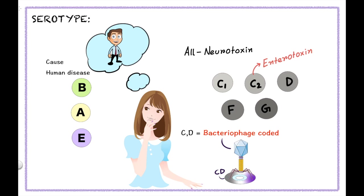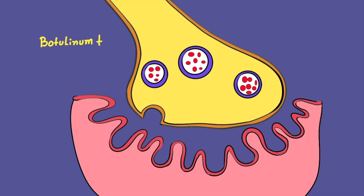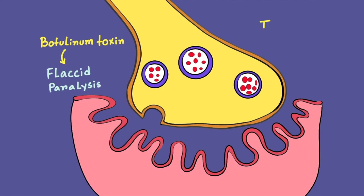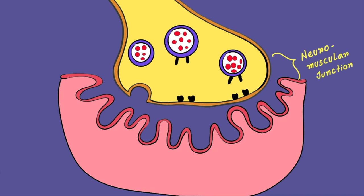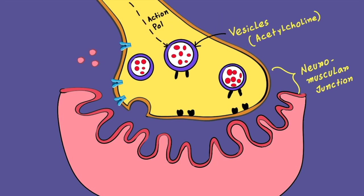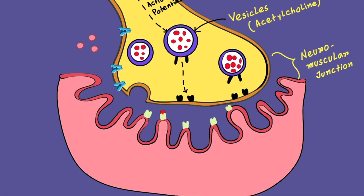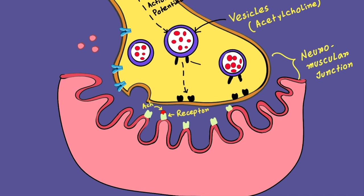Now let's discuss about the mechanism of action. As we know, botulinum toxin produces flaccid paralysis and tetanus toxin produces spasticity. Here, this is the nerve ending and this portion is the neuromuscular junction. These are the vesicles loaded with acetylcholine. When an action potential comes, these vesicles fuse with the nerve membrane and release acetylcholine by exocytosis. This acetylcholine binds with the receptors present on the muscle fibers and helps in muscle contraction. These are the SNARE proteins, which help the acetylcholine-filled vesicles to fuse with the nerve membrane.